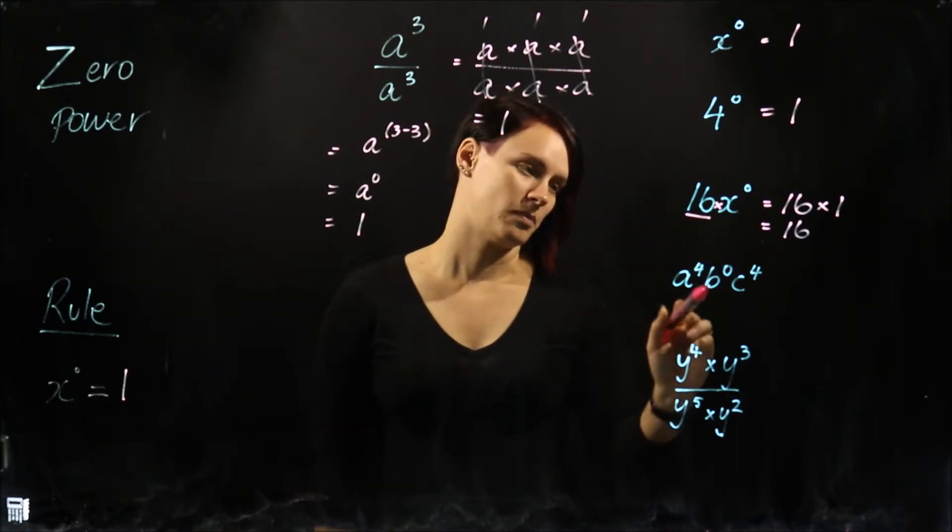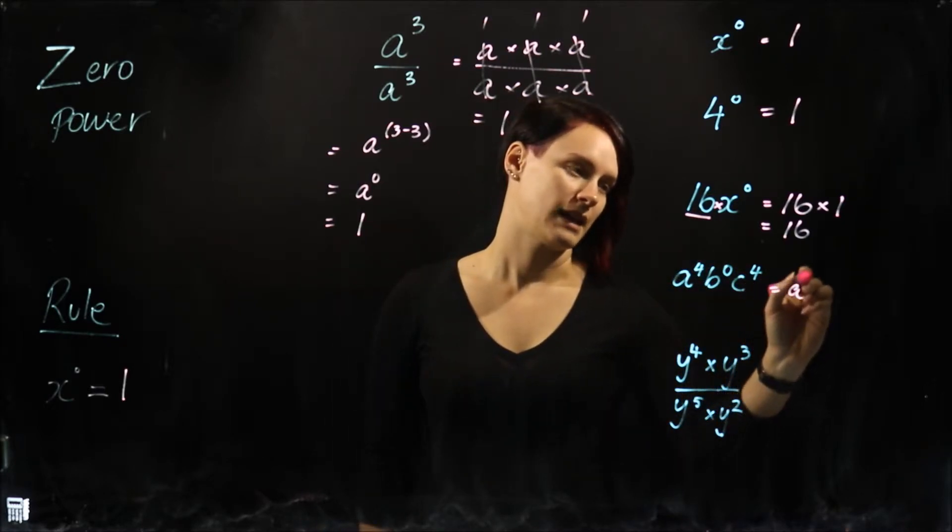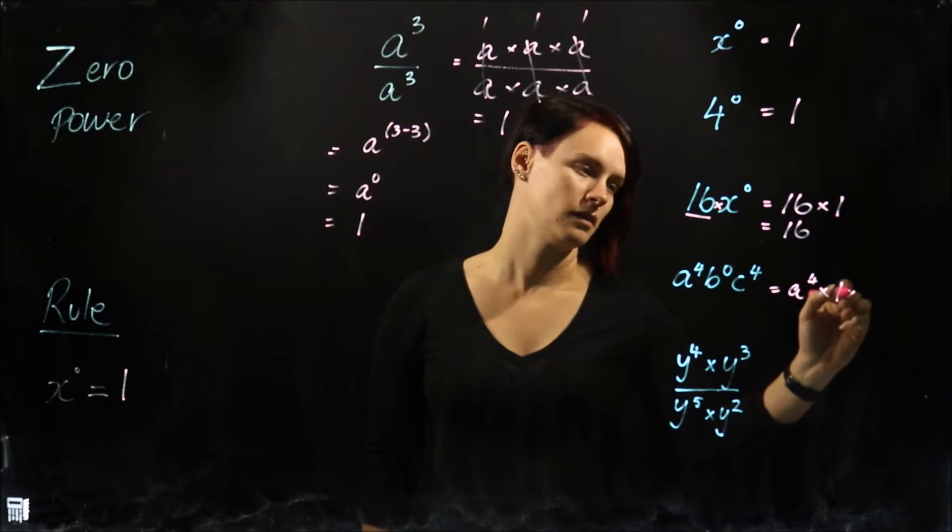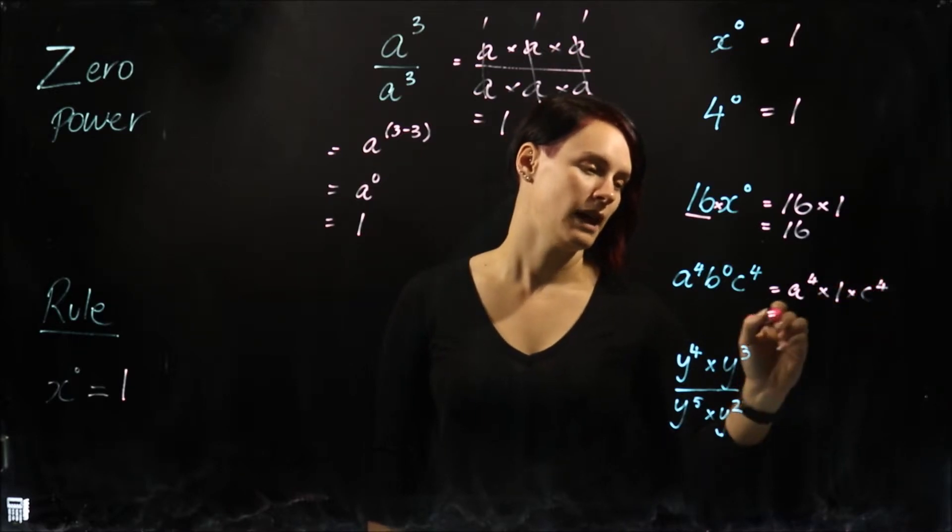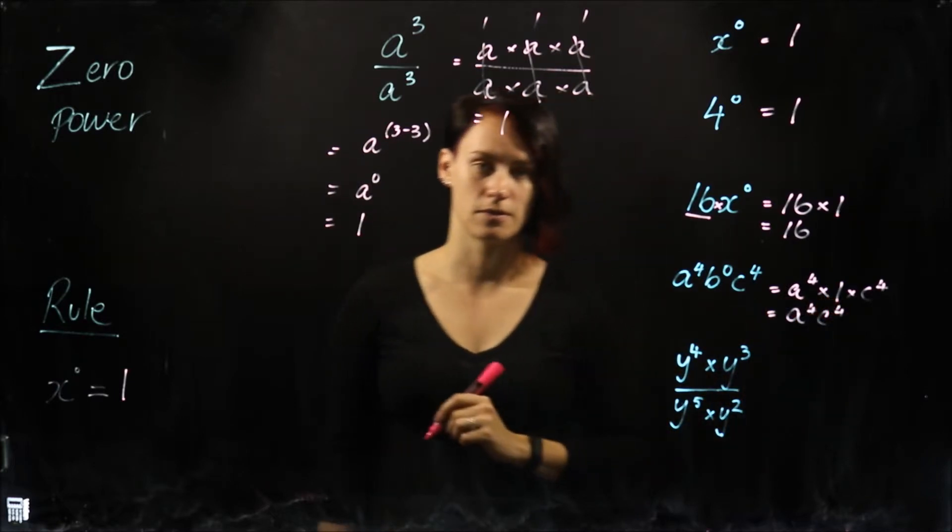Now we've got A to the power of four, B to the power of zero, C to the power of four, which is saying the same as A to the power of four times one times C to the power of four. And we are simply left with A to the power of four, C to the power of four.